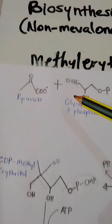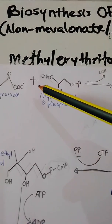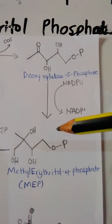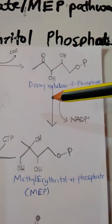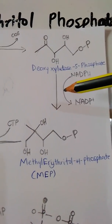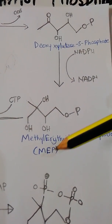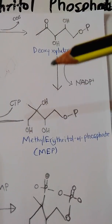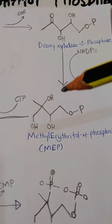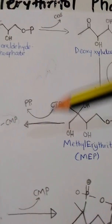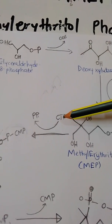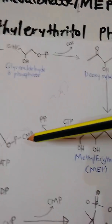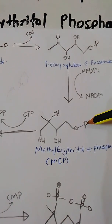To summarize the pathway: the initial precursors pyruvate and glyceraldehyde 3-phosphate undergo a decarboxylation and condensation reaction to yield deoxyxylulose 5-phosphate. The deoxyxylulose 5-phosphate undergoes a reduction reaction followed by intramolecular rearrangement to produce MEP — the intermediate that gives the MEP pathway its name. The next reaction is activation of MEP by CMP, where CTP loses a diphosphate to generate cytidine monophosphate, which reacts with the terminal carbon of MEP.